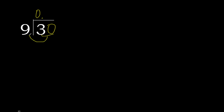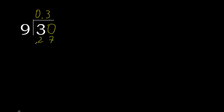30 is not less, therefore work with 30. 9 multiplied by which number is nearest to 30 but not greater? 9 multiplied by 4 is greater, so multiplied by 3 equals 27. 30 minus 27 is 3.